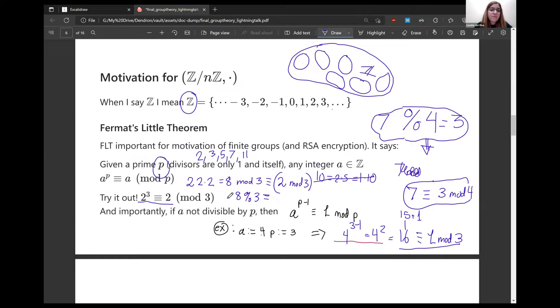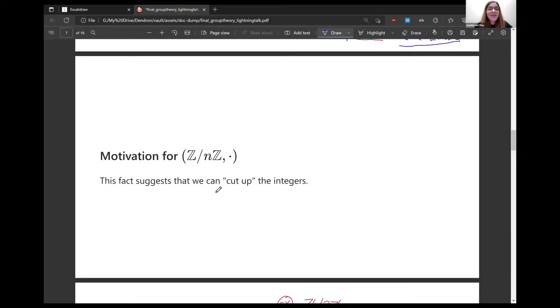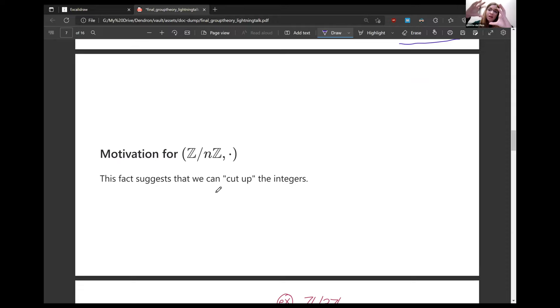Now, this is incredibly powerful. This fact, Fermat's little theorem suggests the fact that we can cut up the integers to make these small little nodes where these numbers live. For example, I'll propose that this group, the integers mod five, only consists of one, two, three, and four. Why? What is tying them together to make a structure?